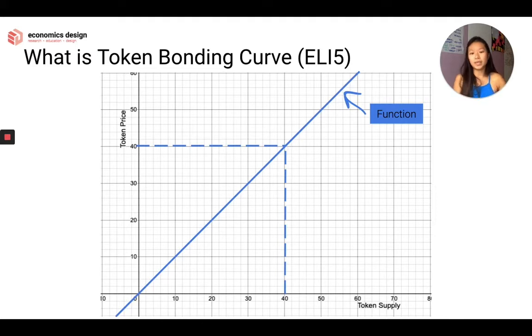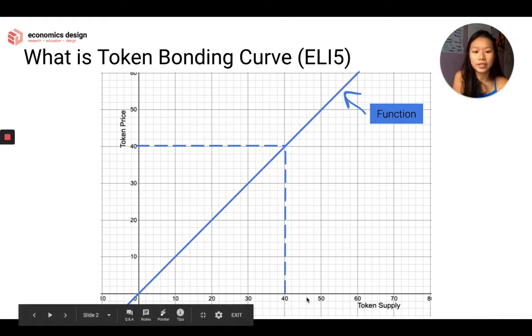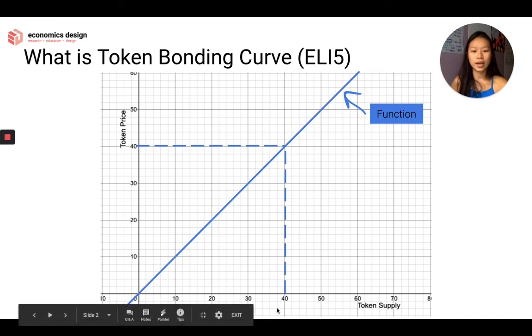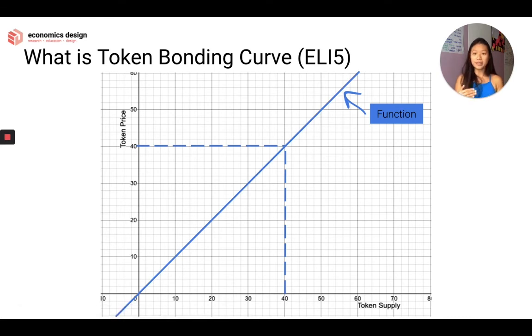So what if we want to buy 10 tokens? Someone bought 40 tokens already and I want to buy 10 tokens, which means I'm buying token 41 to token 50. That's 10 tokens. That means I will just, using simple graph functions, find out the area under the graph here. And that will be the price I'm going to pay when I buy additional 10 tokens.